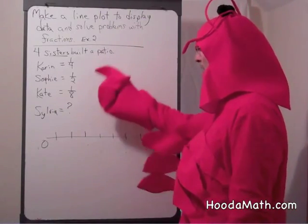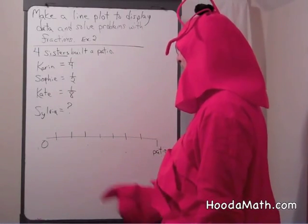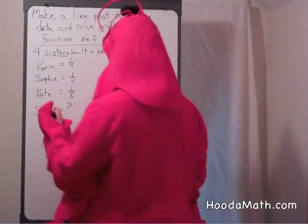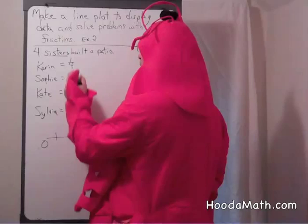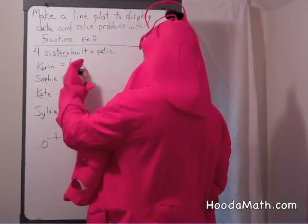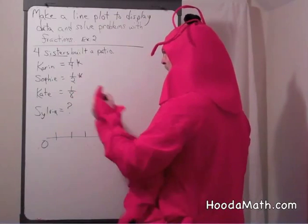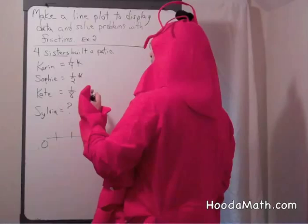Before we can combine these to find out what they did, we have to put them into common denominators. Well, eight is a multiple of two and four, so we can multiply both of these fractions to have eight as the denominator. What would we have to multiply four by? Two.